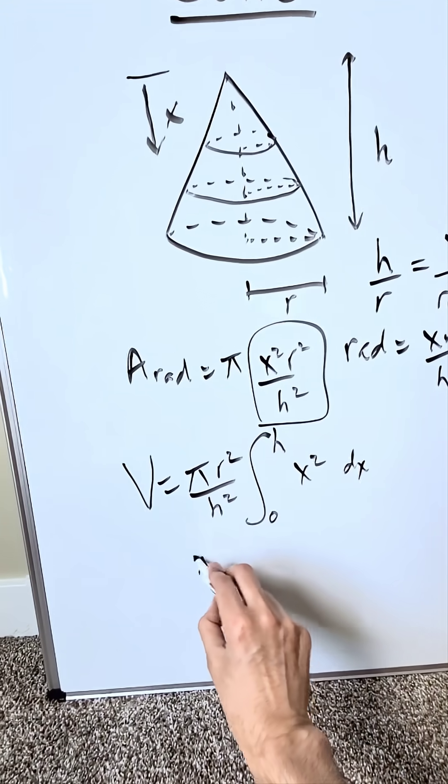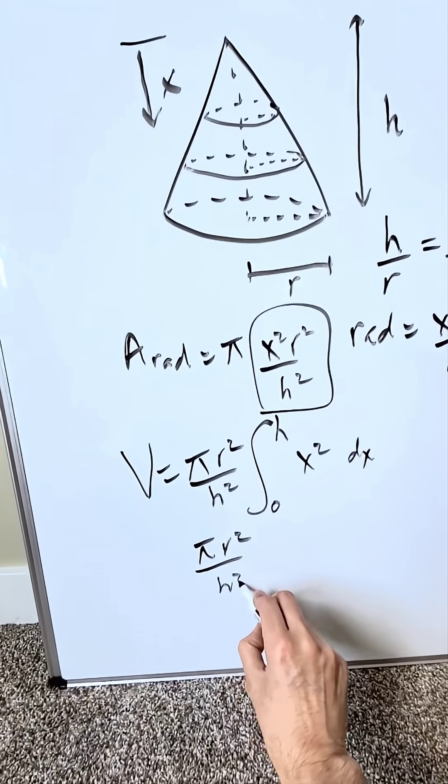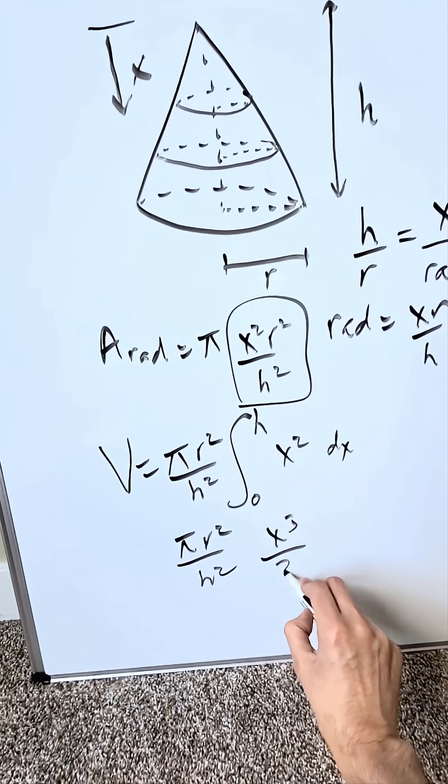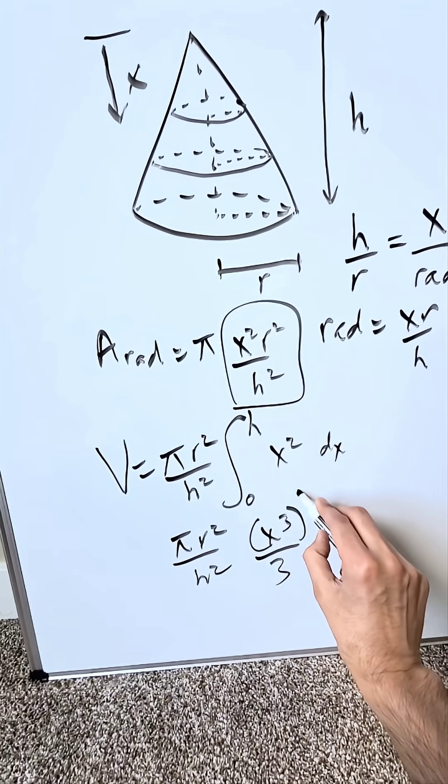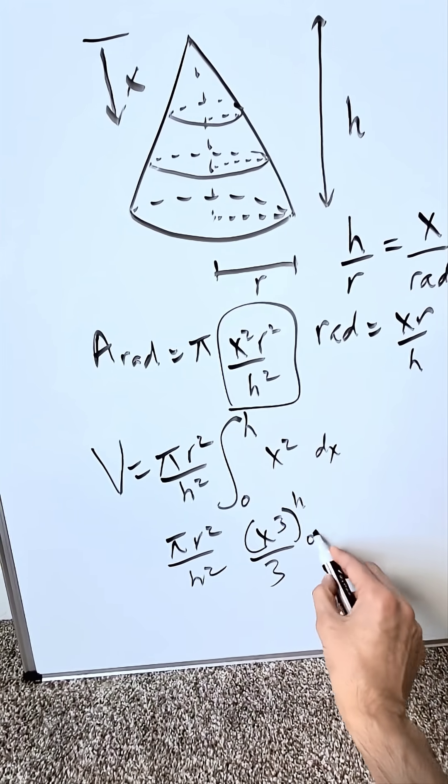You're integrating this. What do you have? It's not hard. It's just polynomials. You have x cube over 3. Upper limit over here is going to be h, lower limit 0 which you don't need to put.